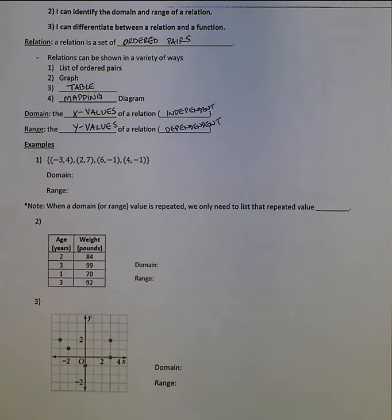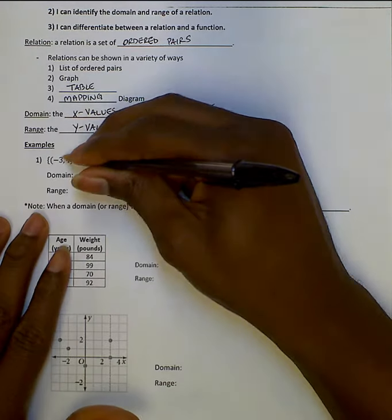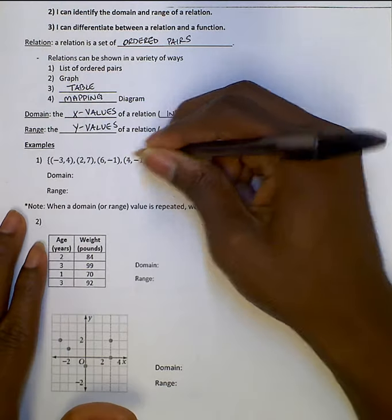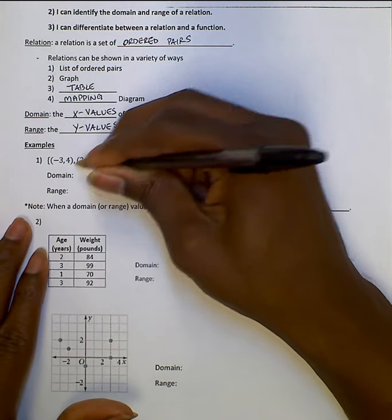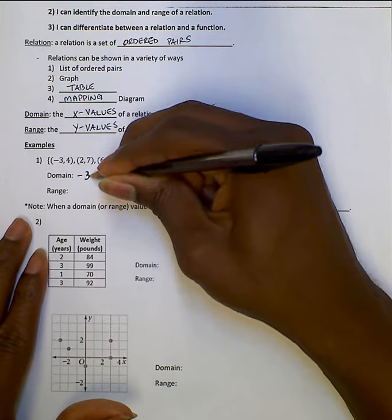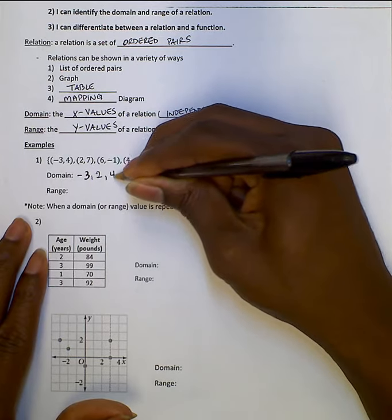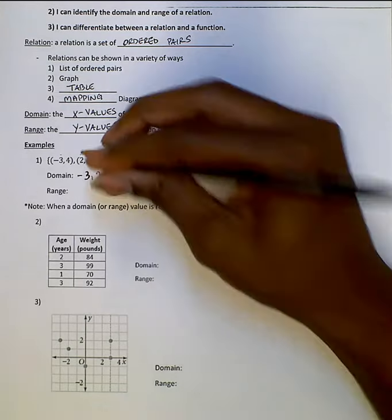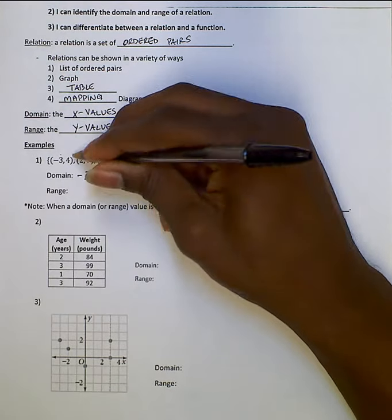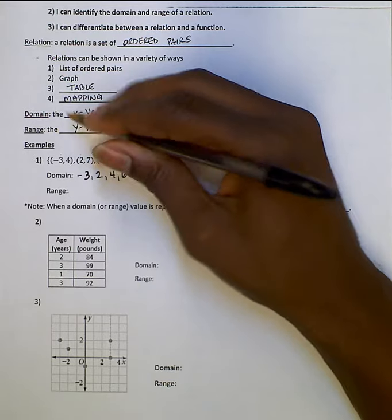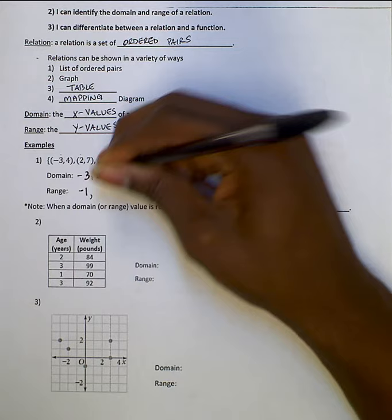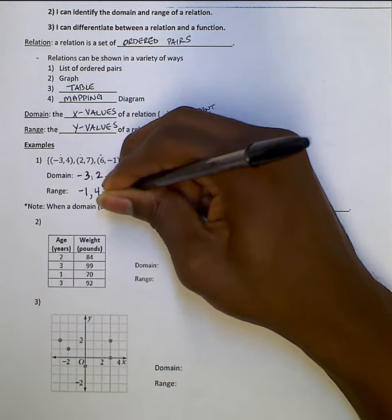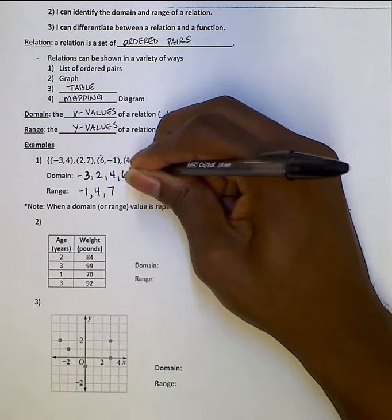When we list the domain and range, we look at the x-values and order them from least to greatest. So for this relation — this set of ordered pairs — I'm going to write the domain. Domain is just the x-values from least to greatest: negative three, two, four, six. Now write them from least to greatest — that'll help you out. Do the same thing for the range; remember the range is the y-values: negative one, four, seven. You get brackets when you're done — notice, not parentheses.